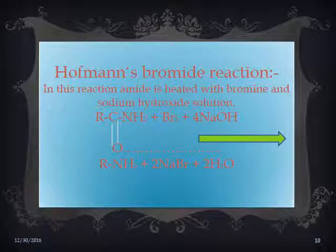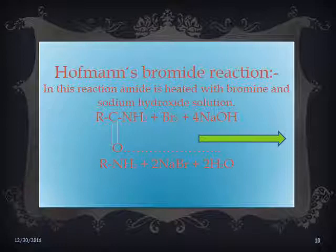The second reaction according to the list is the Hofmann Bromide reaction. In this reaction, an amide is treated with bromine and sodium hydroxide solution. The general reaction is: RCONH₂ + Br₂ + 4NaOH gives the primary amine RNH₂ plus 2NaBr plus Na₂CO₃ plus 2H₂O. Remember that Hofmann Bromide reaction gives us a primary amine.